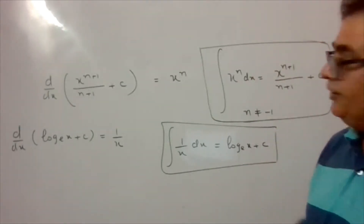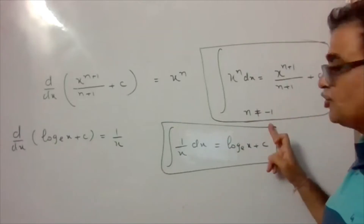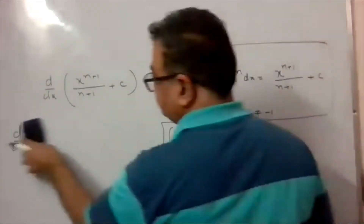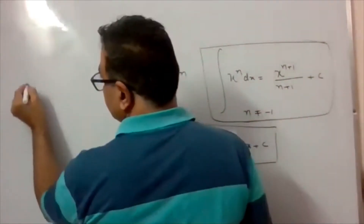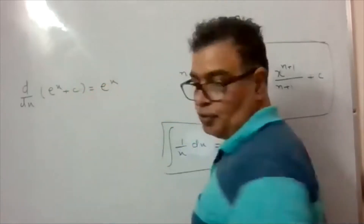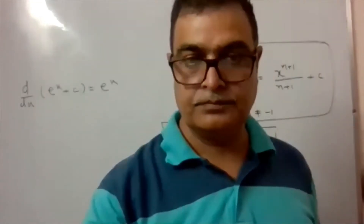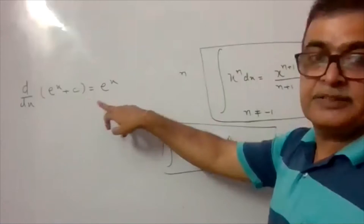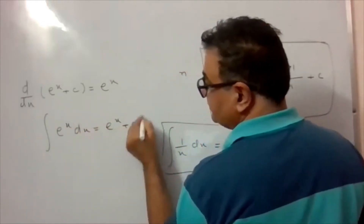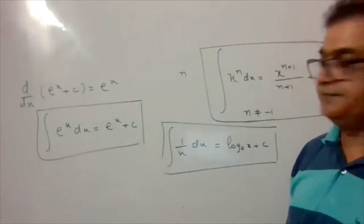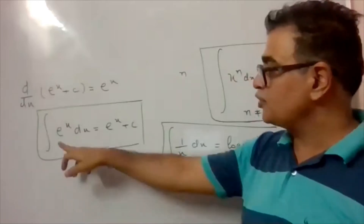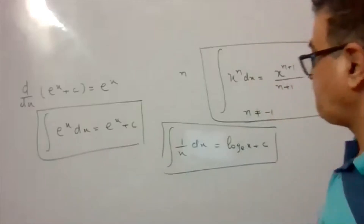To summarize the list so far: Formula 1: integration of x^n dx = x^(n+1)/(n+1) + C, where n ≠ -1. Formula 2: integration of 1/x dx = log x + C. Formula 3: derivative of e^x + C is e^x, therefore integration of e^x dx = e^x + C.